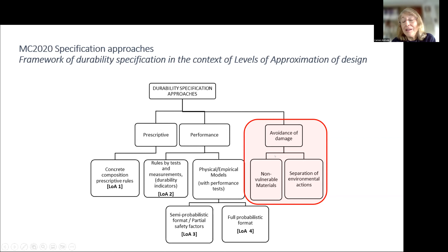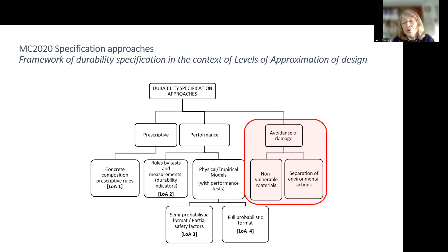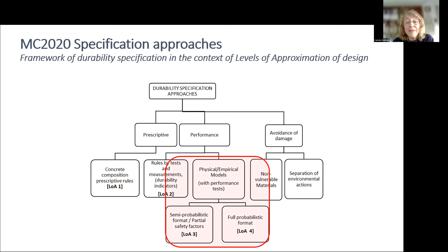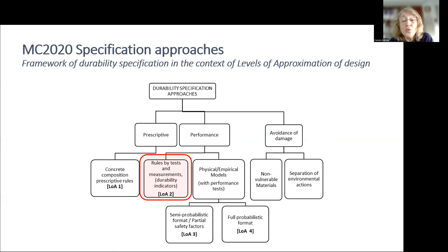In the design chapters, all of these levels are present, separated for the initiation period and for the propagation period. They are also applied to all possible durability problems and attacks. However, in the model code we only have physical-empirical models for corrosion — specifically carbonation-induced and chloride-induced corrosion — not for freeze-thaw or sulfate attack. For deterioration mechanisms that are not corrosion, we have composition rules or indicators and avoidance of damage, but the additional physical models are only for corrosion. Level 1, Level 3, and Level 4 are covered, and the object of this workshop is Level 2.